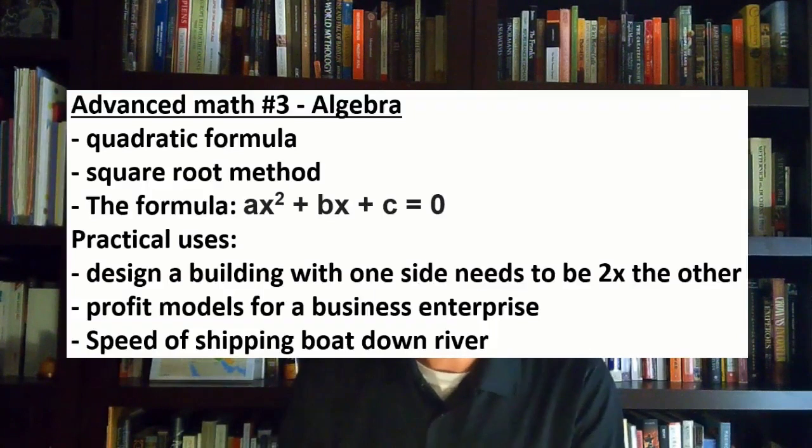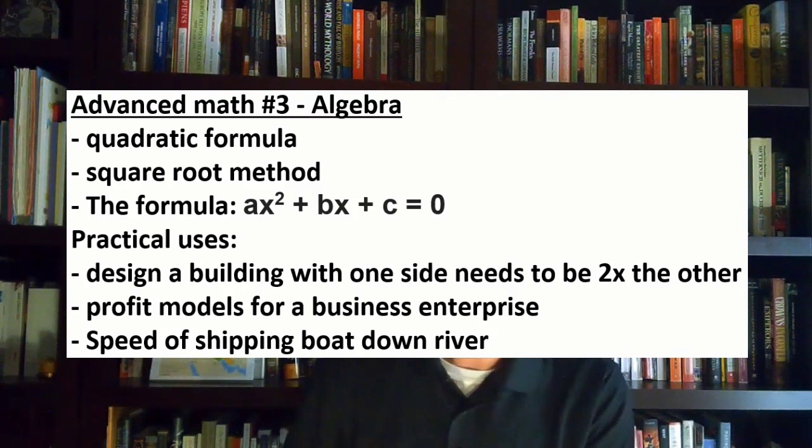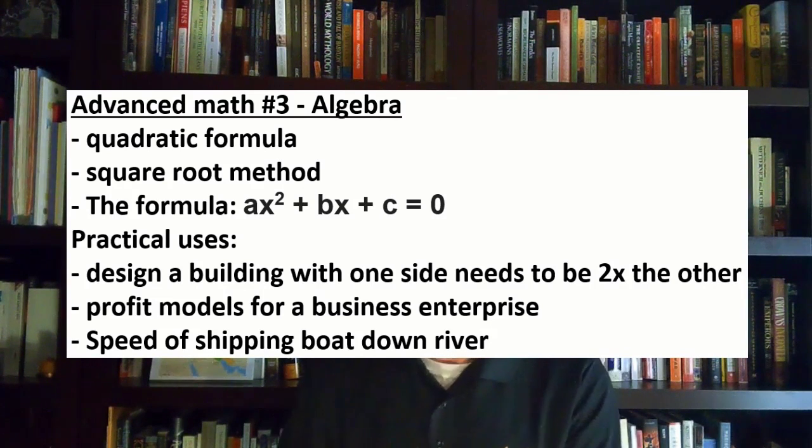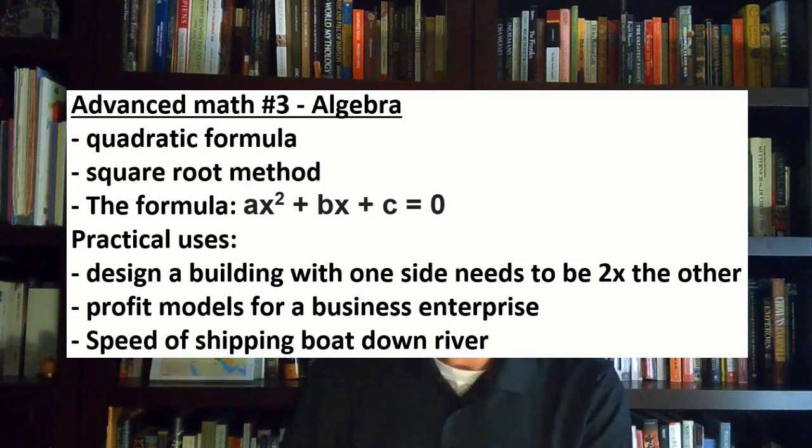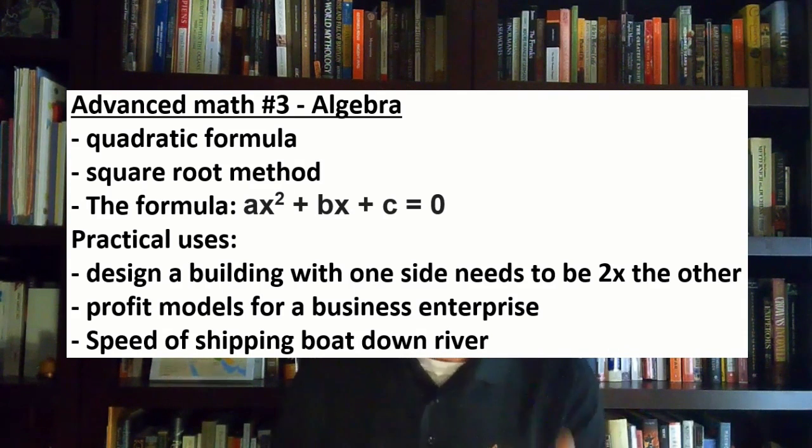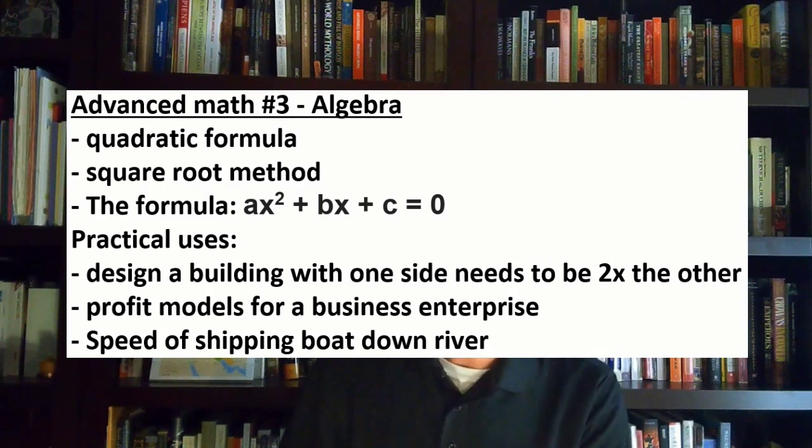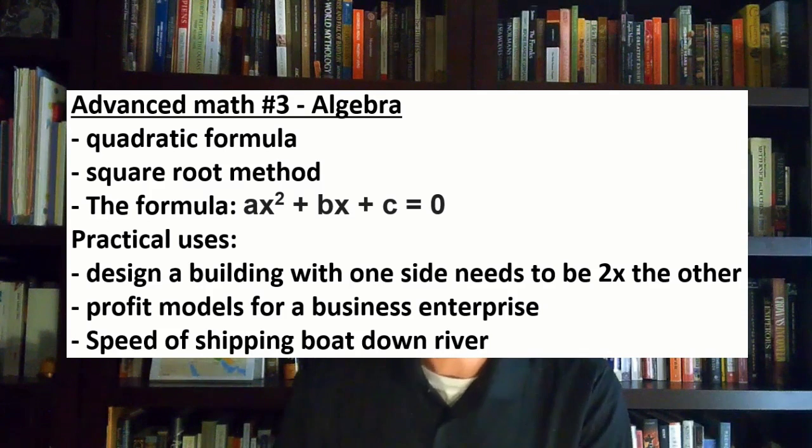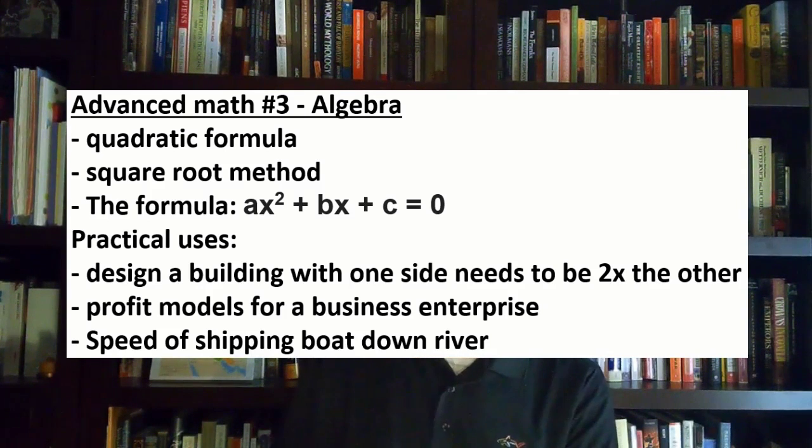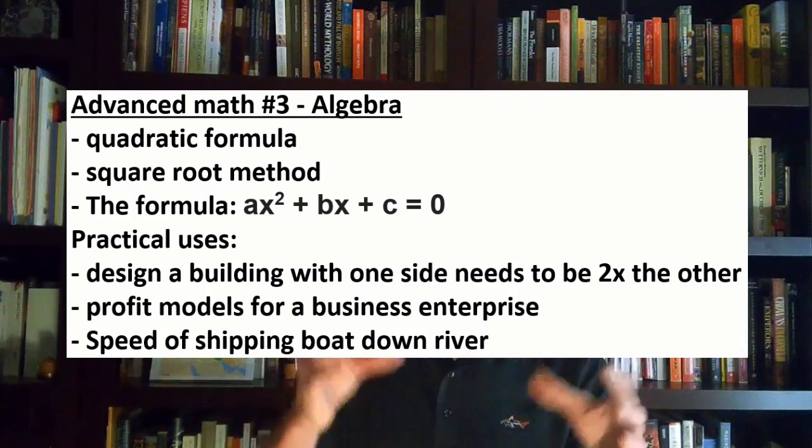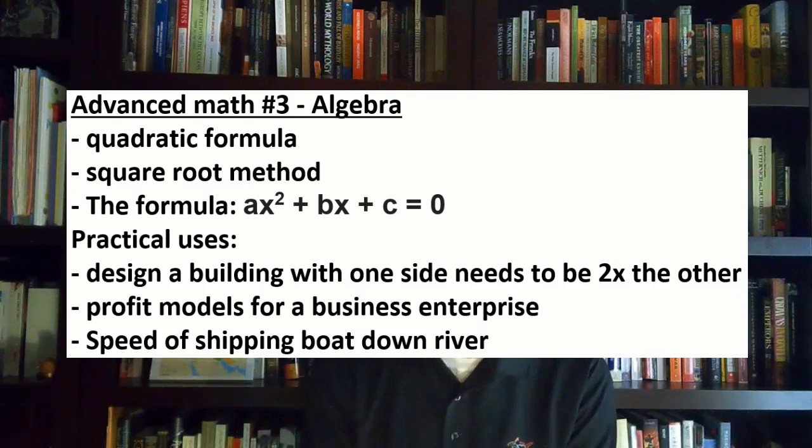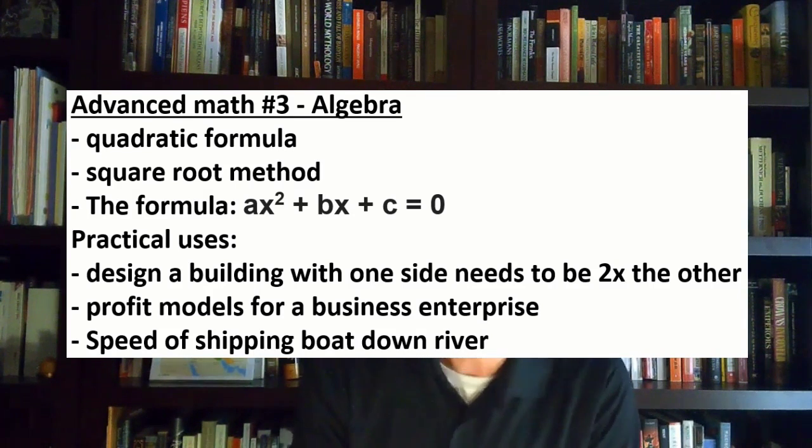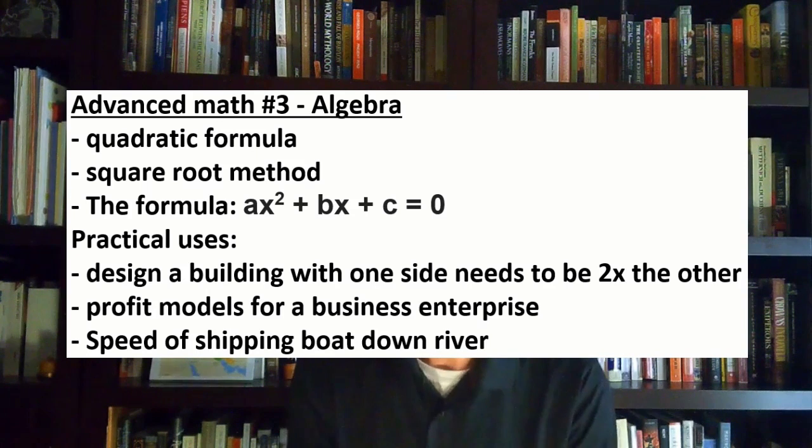Finally, they also were well-versed with algebra. They did have their own quadratic formula. The quadratic formula is where you have A-X-squared plus B-X plus C equals 0. They had both the quadratic formula and their own square root method. In fact, they were very advanced in the square root calculation. When would you use this? This would be like, I'm calculating a building where I know one side needs to be two times the other. You would see this being used in dealing with profit models for a business enterprise. If you're talking about the speed of different shipping boats down a river, it helps to have algebra.